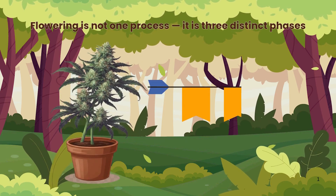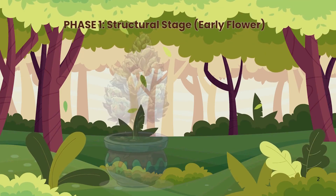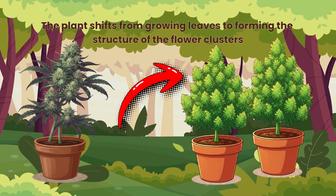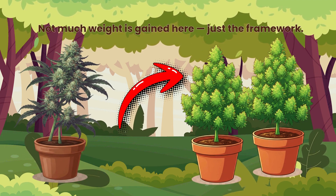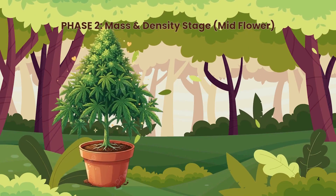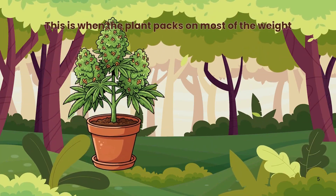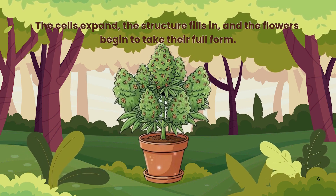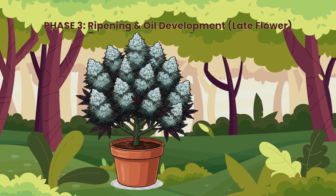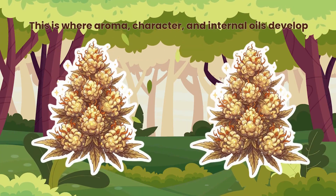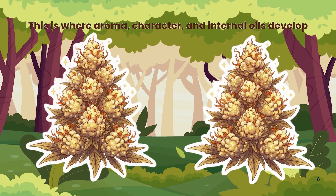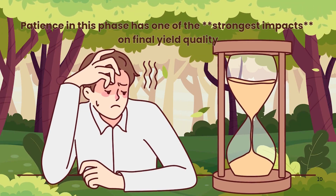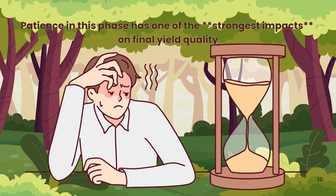Flowering is not one process, it is three distinct phases. Phase one — the structural stage, early flower — the plant shifts from growing leaves to forming the structure of the flower clusters. Not much weight is gained here, just the framework. Phase two — mass and density stage, mid flower — this is when the plant packs on most of the weight. The cells expand, the structure fills in and the flowers begin to take their full form. Phase three — ripening and oil development, late flower — this is where aroma, character and internal oils develop. Rushing this stage reduces flavour, density and experience. Patience in this phase has one of the strongest impacts on final yield quality.